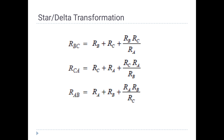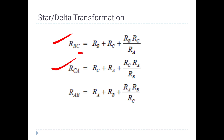For star to delta transformation, RBC equals RA plus RB, plus the product of RA times RB, divided by RC. Similarly, divide by the appropriate star resistances. This gives us RBC in terms of the star network resistances.